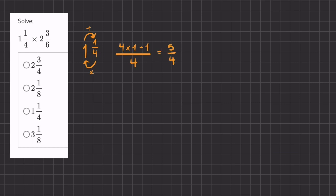We'll do the same thing for 2 and 3/6. We'll multiply the denominator by the whole number and then we will add that product to the numerator. So it's going to be 6 times 2 plus 3 all over our original denominator of 6. So 6 times 2 is 12 plus 3. That's 15 over 6.